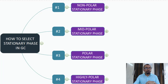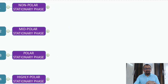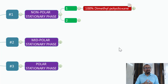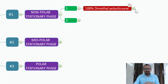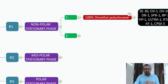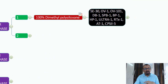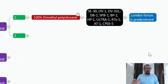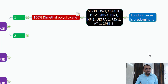Let us begin with the non-polar stationary phase. If your column consists of 100% dimethyl polysiloxane, that means your column is a highly non-polar column. These are a few commercial examples of 100% dimethyl polysiloxane columns. In this case, the retention of your analytes is governed by London dispersion forces.